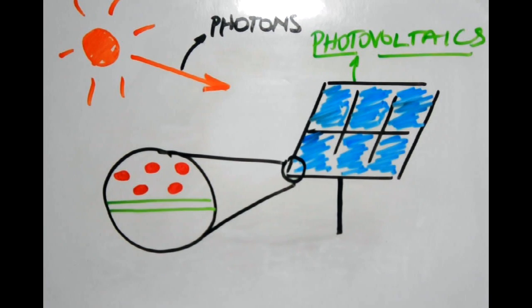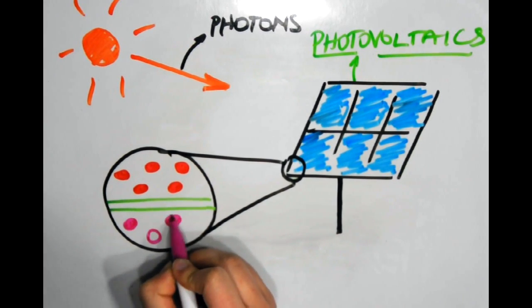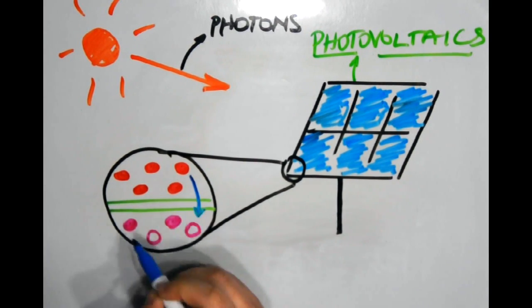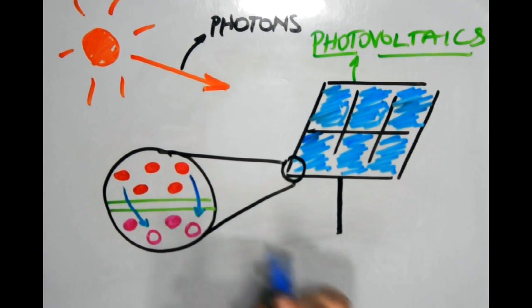When these two are placed side by side, the free electrons from one silicon jump over to the other one, making one positively charged and the other negatively.